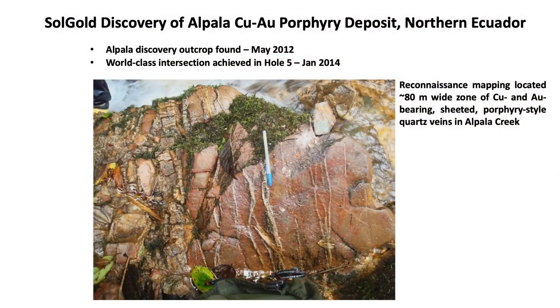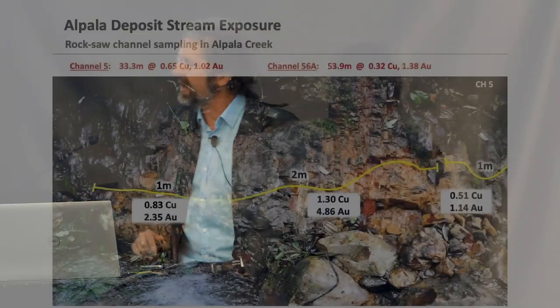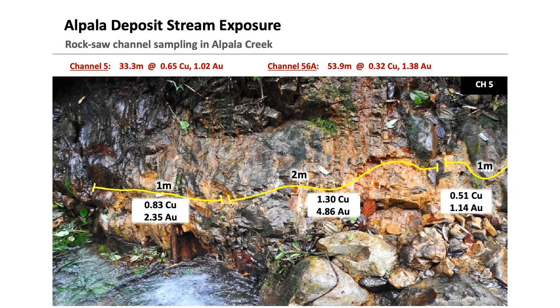Now we move to Alpala in northern Ecuador — Sol Gold's flagship deposit and recent discovery. Alpala was discovered in May 2012: basically 80 meters of 2% chalcopyrite-pyrite-bearing sheeted porphyry-style quartz veins — B-veins. Early channel samples showed half percent to 1.3% copper, up to 4.86 grams gold, totaling 54 meters at around 0.6% copper and 1.38 grams gold. It was only 80 meters wide — the tip of the iceberg, literally. It wasn't until drill hole 5 came along that the significance of this small outcrop was discovered; this porphyry is very, very large.